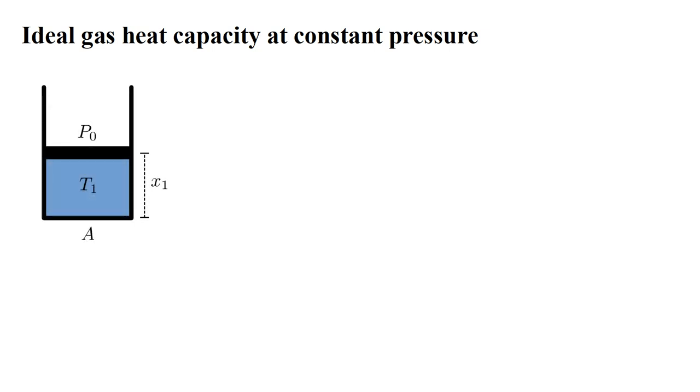Suppose we place a gas sample at temperature T1 in a cylinder with cross-sectional area A. The gas presses against the movable piston, creating a closed volume with height X1. One side of the piston is exposed to the atmosphere at pressure P0. The gas will expand or contract until the internal pressure is also P0. The volume V is the area A times the height X. From the ideal gas law, P0 V1 equals NK T1.